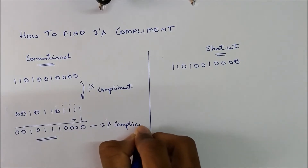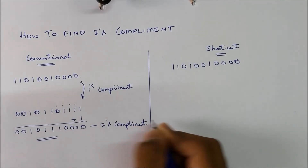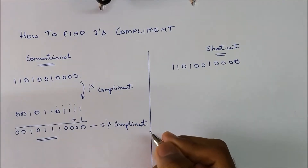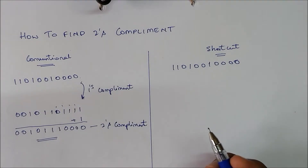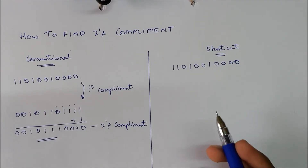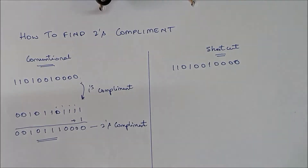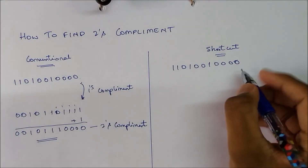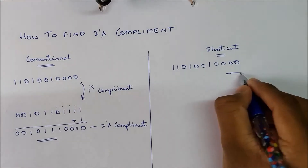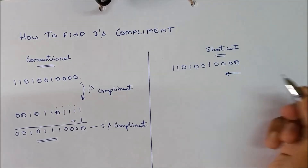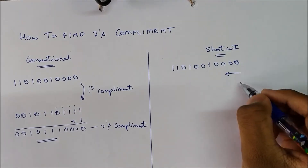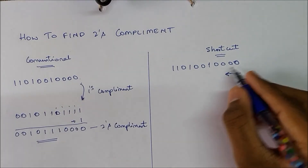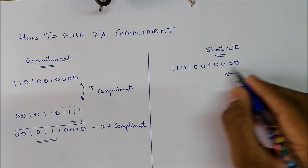Now we will move on to the shortcut method. In the shortcut method we write the number from right to left as it is until we encounter the first 1.